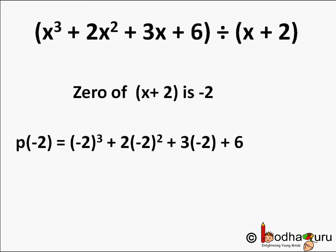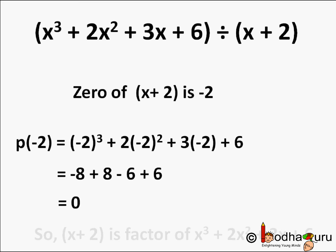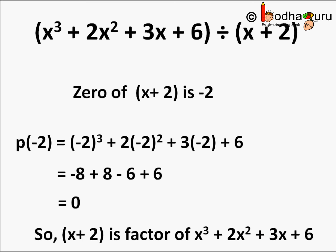Opening the brackets we get -8 + 8 - 6 + 6, which equals 0. So (x + 2) is a factor of x³ + 2x² + 3x + 6. This way we can easily verify whether a polynomial is perfectly divisible by another polynomial or not.